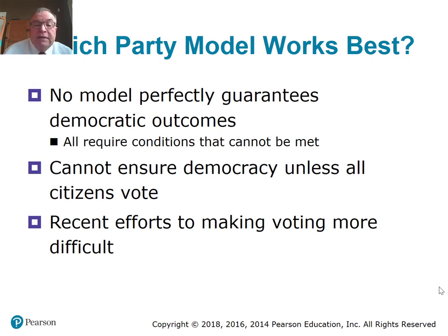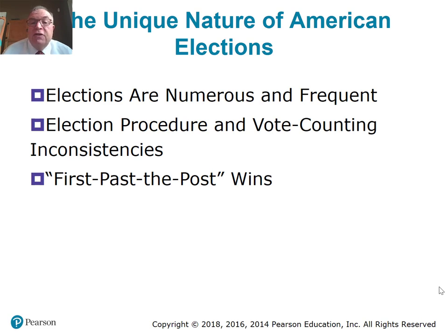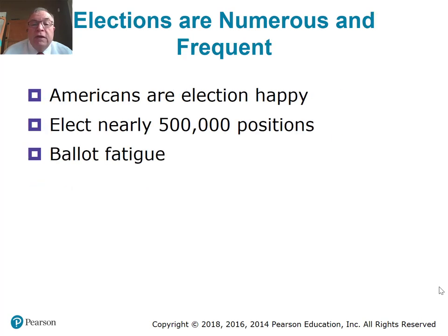We cannot ensure democracy unless all citizens vote. Part of the difficulty in America stems from the unique nature of American elections. We have numerous and frequent elections across all levels — federal, state, and local. Election procedures and vote counting are very inconsistent, and we use first past the post. We elect nearly 500,000 positions, and people often have ballot fatigue, especially from issues and referendums. It's not unusual to go to the ballot box and have 30 or 40 choices.